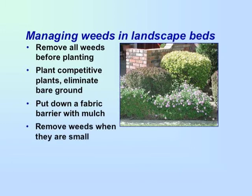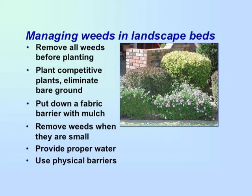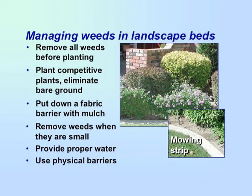If weeds invade, remove them when they are small but before they go to seed, and be sure to remove the entire plant. Provide landscape plants with sufficient water, but be careful not to overwater. Drip irrigation provides water only to landscape plants and reduces weed problems. To keep lawn out of beds, use a physical barrier such as concrete or another type of mowing strip. Few, if any, herbicides should be needed in a landscape that is well designed and properly maintained.